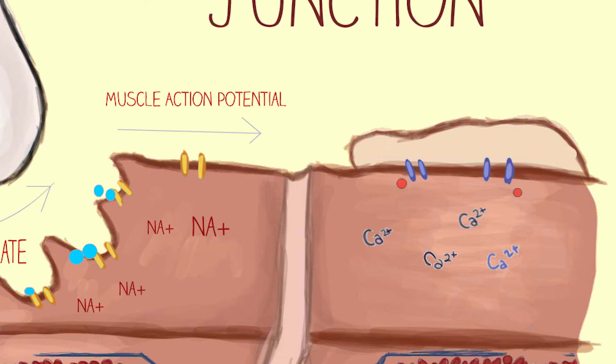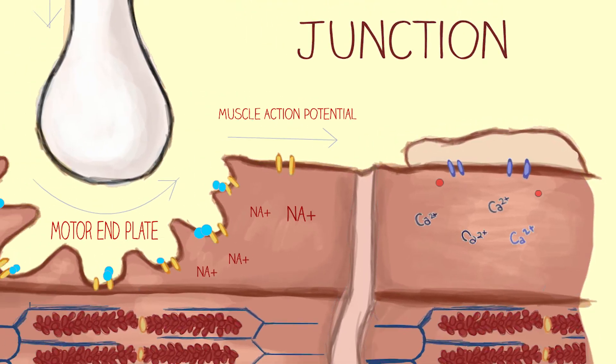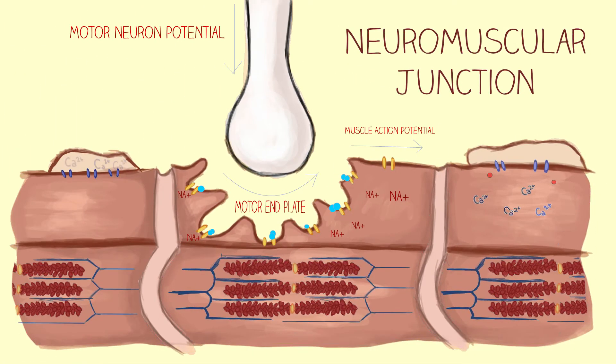Remember, from earlier, that at rest there is a 10,000-fold difference of calcium between sarcoplasmic reticula and sarcoplasm. So this means that upon activation of calcium release channels, calcium will rush out from the sarcoplasmic reticula into the sarcoplasm of the muscle fiber following calcium's electrochemical gradient. This is the end result of all the steps of muscle excitation.